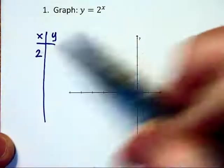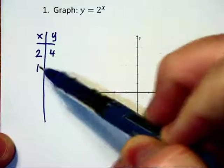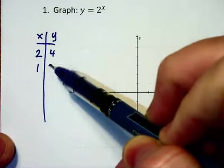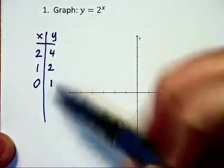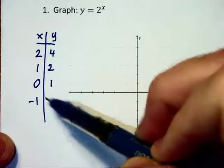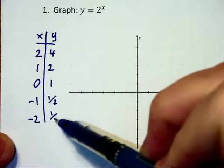Let's let x be 2. 2 to the second power is equal to 4. If x is 1, 2 to the first power is 2. Anything to the 0 power is 1. 2 to the negative first is 1 half and 2 to the negative second is 1 fourth.